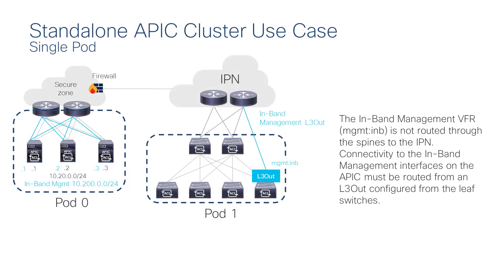If in-band management is required, you can add in-band management IPs to the APICs. In-band management connectivity will not go through the spines. So if there is a requirement to connect in-band management to the pod leaf and spine switches, you would create an L3out in the management tenant and connect this L3out from a leaf switch to the IPN.